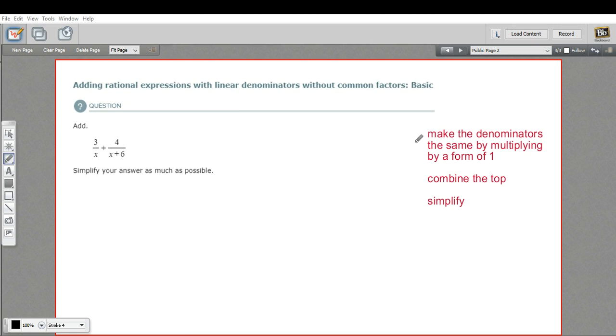We're going to make the denominators the same first, because you can't add fractions unless their denominators are the same, by multiplying each of them by some form of the number one. Then, once we've done that and we've got like denominators, we can combine the top and try to simplify.